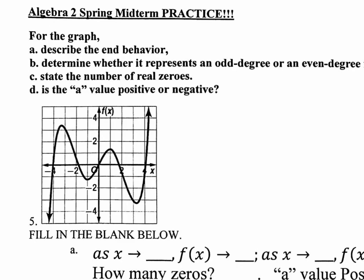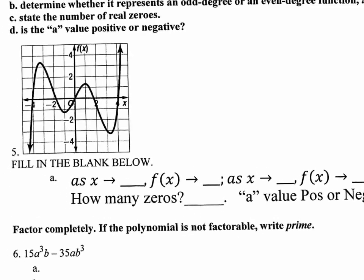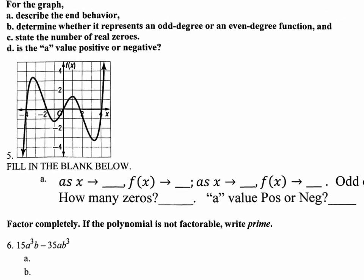Let's talk about the end behavior. On a multiple choice test you'll read the answers written like: as x approaches blank, f of x approaches what? As x approaches negative infinity — going to the left — f of x approaches negative infinity because it goes down. And as x approaches positive infinity, f of x approaches positive infinity as well.